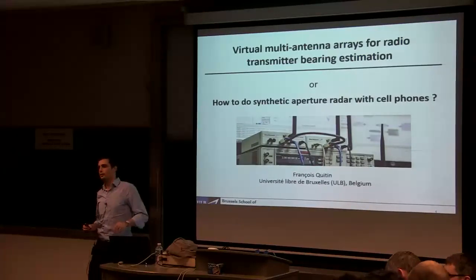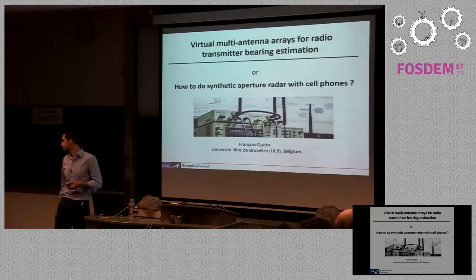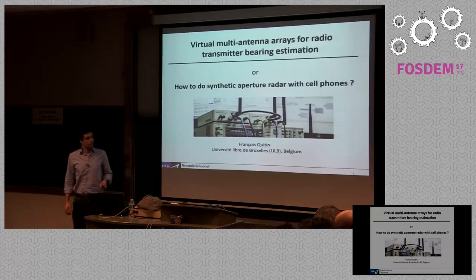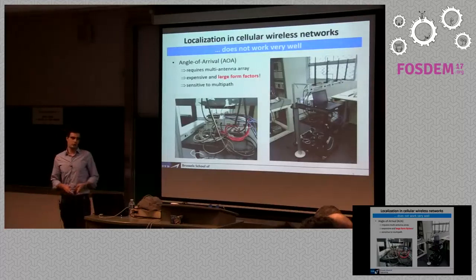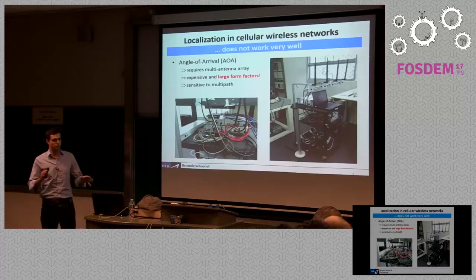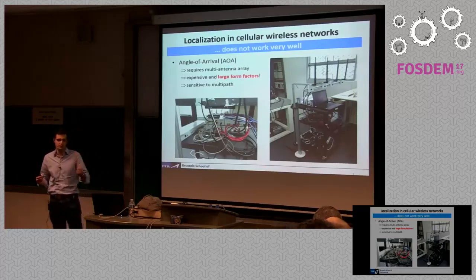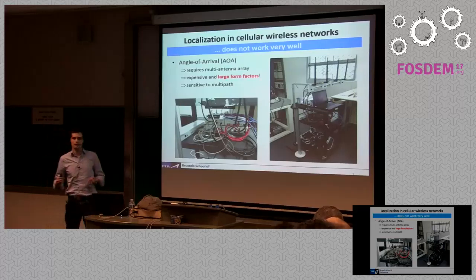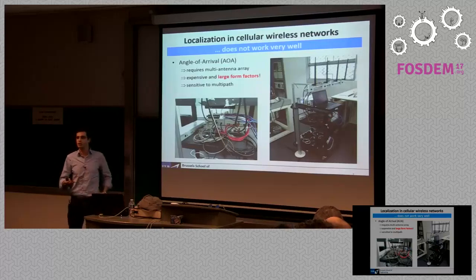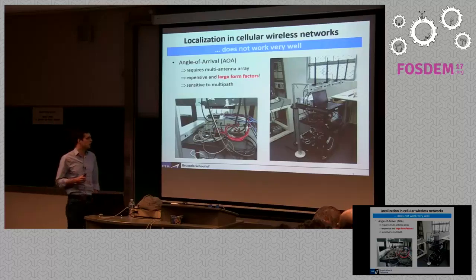This talk in particular is targeting angle of arrival estimation — determining the direction of an RF transmitter. Classically, if you want to determine the direction of a transmitter, you would use a calibrated multi-antenna array. You have multiple antenna elements, and if the front ends are properly calibrated, you can look at the phase difference at each received antenna and determine the direction of the transmitter. There are tons of algorithms published about this: MUSIC, beamforming, ML estimation, and so on.